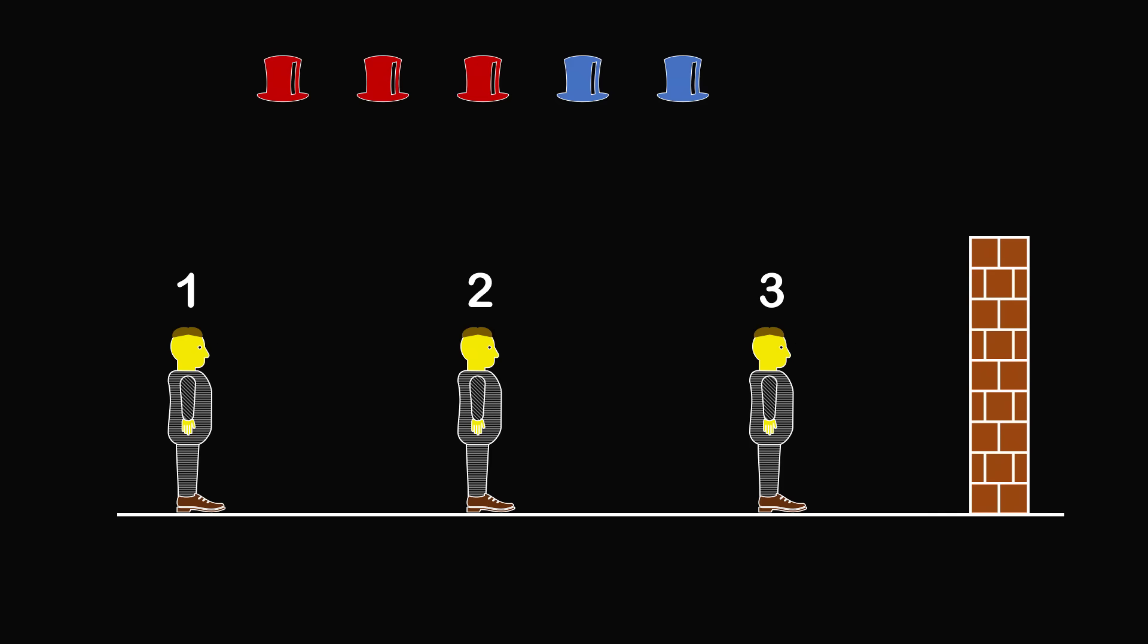We will get started by focusing on the different ways the hats could be placed on the 3 prisoners' heads. We have 3 red hats and 2 blue hats. But for a moment, let's just ignore that restriction and say we have an unlimited amount of red and blue hats.